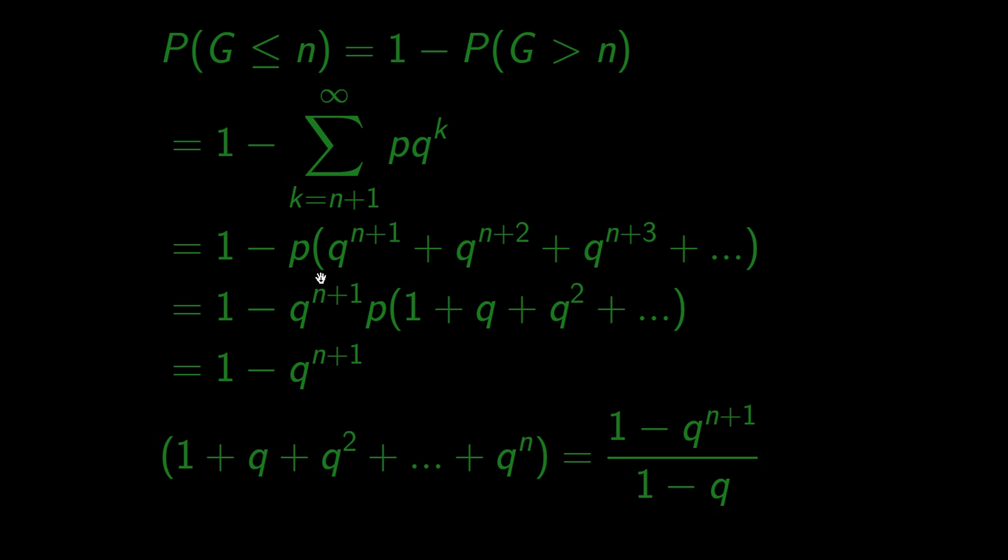Let's go back to our probability. This number here is known in probability as the cumulative distribution function. Cumulative because it accumulates the probability of all events from 1 to n.